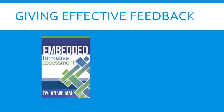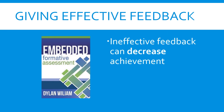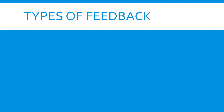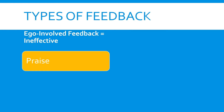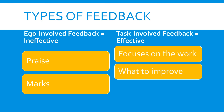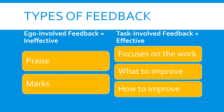Before you start giving students audio feedback, let's make sure you're doing so effectively, as Dylan William tells us that providing feedback ineffectively can actually hurt achievement. In his book Embedded Formative Assessment, Dylan William points out that ineffective feedback can actually decrease achievement and effective feedback can increase achievement. Ineffective feedback is typically ego-involved — things like praise or giving marks that focus on where the learner sits in the classroom as opposed to the work itself. Task-involved feedback, on the other hand, is effective. It focuses on the work, on what to improve and more so how to improve it, and those things can lead to a great increase in student achievement.